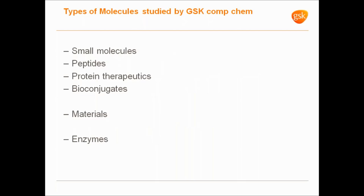If I gave this talk maybe 20 years ago, I would really be focusing on small molecules, because that was where computational chemists tended to work. These days we work on all kinds of different types of molecules — traditional small molecules, peptides, protein therapeutics such as antibodies, bioconjugates where you might join a large molecule to a small molecule, and we're also involved in things like evolving enzymes for manufacturing colleagues so that we can manufacture our products in a more green fashion. But I'm still going to focus the talk today on small molecules, because that's where the bulk of the work still is.